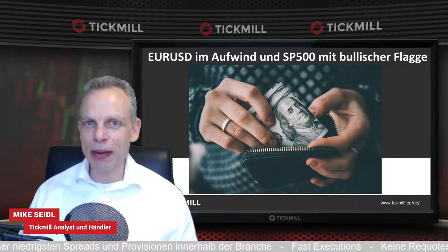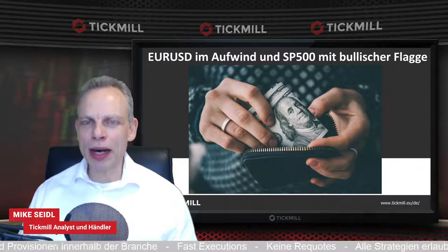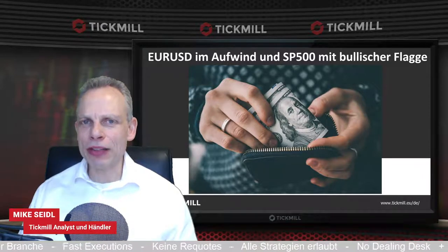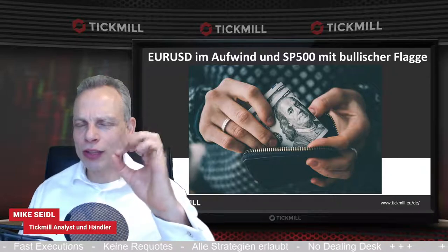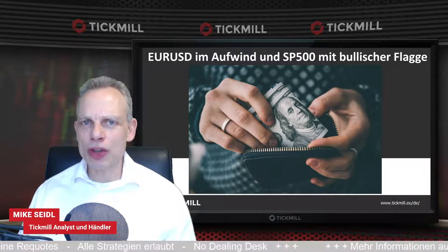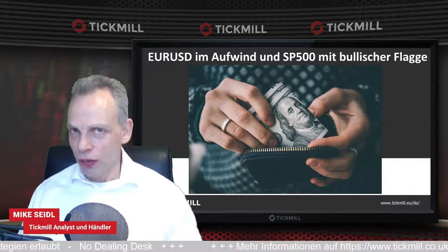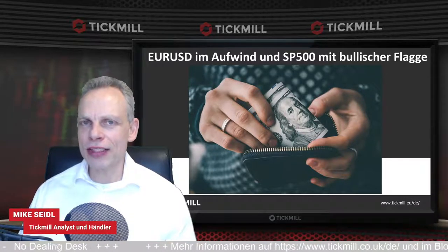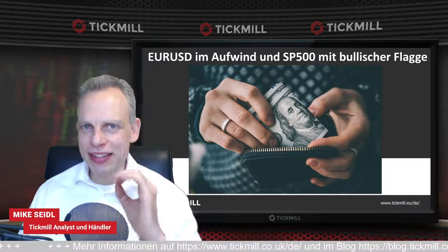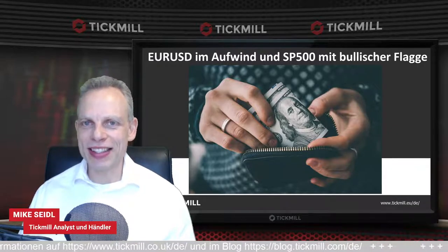Dazu haben wir noch zwei Wunschmärkte: das Cable, also britisches Pfund US-Dollar, und das Währungspaar mexikanischer Peso US-Dollar. Wir schauen nochmal auf den Austral-Dollar US-Dollar – da hatten wir in der letzten Woche über die Schulter-Kopf-Schulter-Formation gesprochen. Das wird jetzt etwas edukativ, denn wir schauen uns das Verhalten an solchen Konstellationen genauer an. Das ist ein sehr spannendes Thema, aus dem man sehr viel lernen kann.